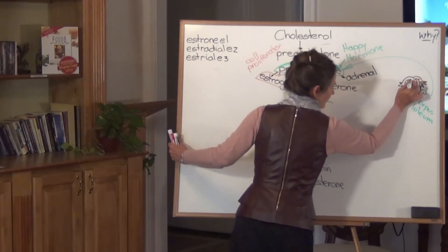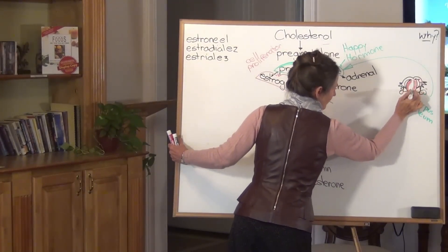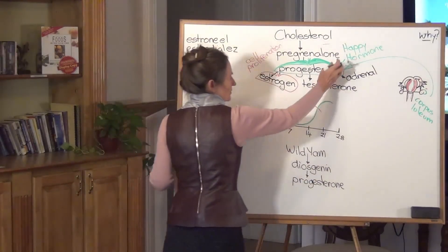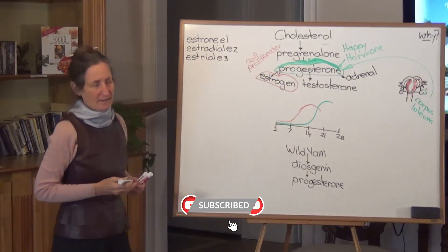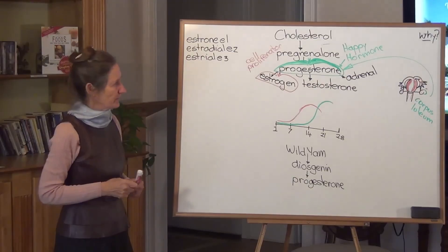Progesterone has a ripening effect on the lining of the uterus, putting the finishing touches on the uterus. Progesterone also heightens a woman's mood at this time of the month to the point of increasing her sexual desire at this time of the month.